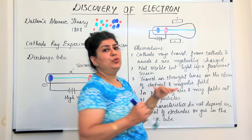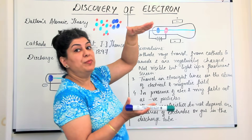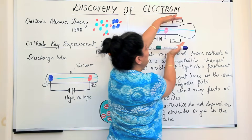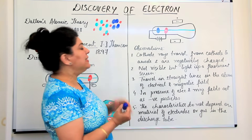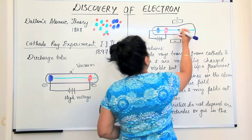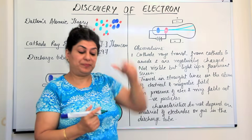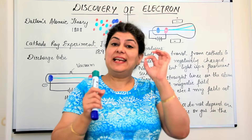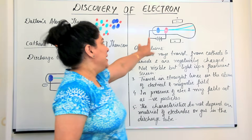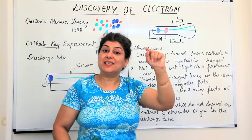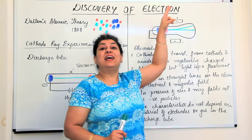To determine the nature of the ray, he took two metallic plates — electrical plates at two terminals — and brought them above and below the discharge tube, subjecting the ray to an electric field. He noticed that the cathode ray deviated and bent towards the positively charged plate. Since like charges repel and opposite charges attract, he concluded that cathode rays consist of negatively charged particles, because the ray was moving towards the positive electrical charge.